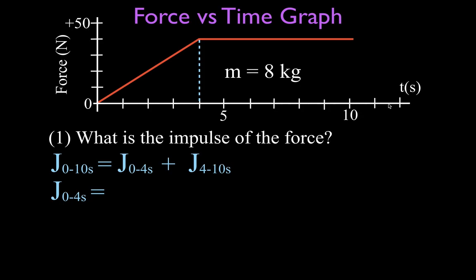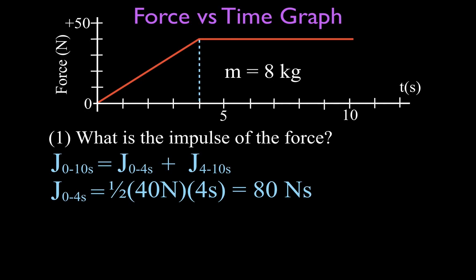We have units on this graph, so from zero to four seconds we have a triangle. The area of a triangle is one half the base times the height. The base is 4 seconds and the height of this triangle is 40 newtons. So that's one half times 4 times 40: 4 times 40 is 160, divided by two gives us 80. The impulse of the force during the first four seconds is 80 newton-seconds.